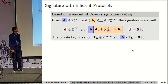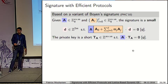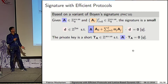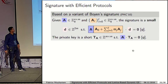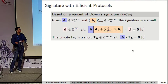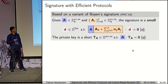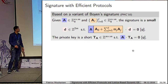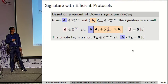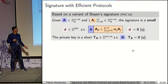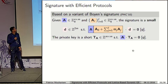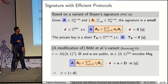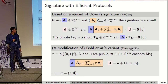For the construction, we'll first build the signature scheme with efficient protocols. To do this, we rely on a signature scheme introduced by Boyen in 2010, which is a Small Integer Solution-based signature: the signature is a short integer solution to some homogeneous linear equation. Given a short basis for the lattice corresponding to this matrix, we can compute such a signature; without it, it is a hard problem.